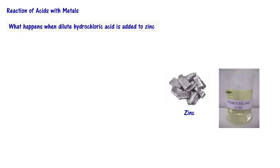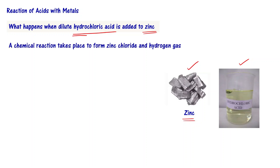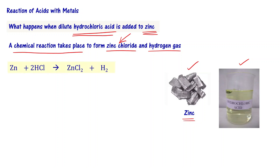What happens when dilute hydrochloric acid is added to zinc? Zinc is a metal — you have shiny zinc particles. When hydrochloric acid and zinc are mixed, a chemical reaction takes place to form zinc chloride and hydrogen gas. Zinc chloride is the salt. You can write: Zn + 2HCl → ZnCl₂ + H₂. H₂ is a gas.